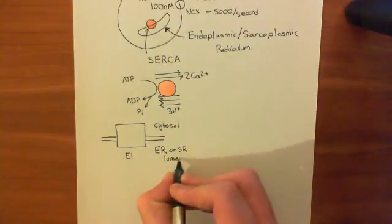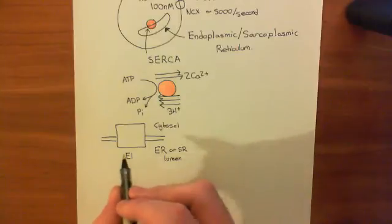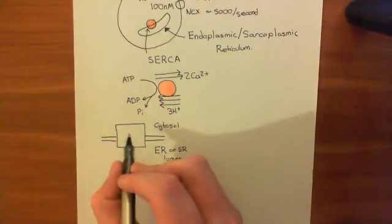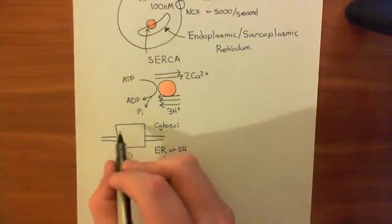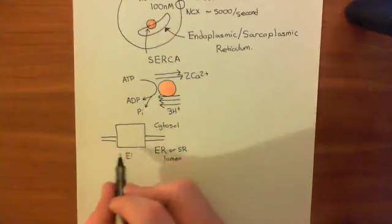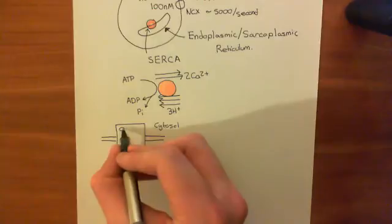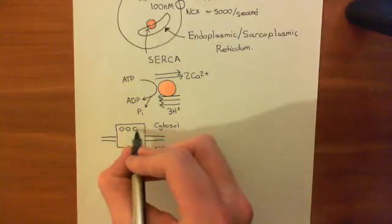Okay, so when the protein is in its E1 state, that means that the ions are being held on the cytosolic side of this membrane. The protein is in the conformation where the ion-binding sites are closer to the cytosol than to the ER or SR lumen. Initially it has three protons bound to it.